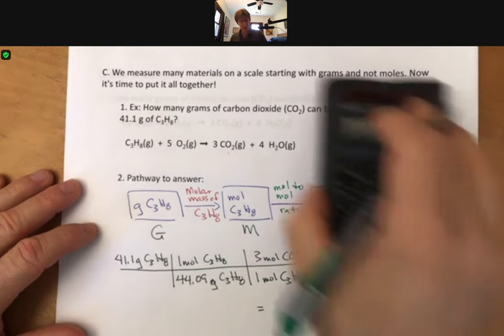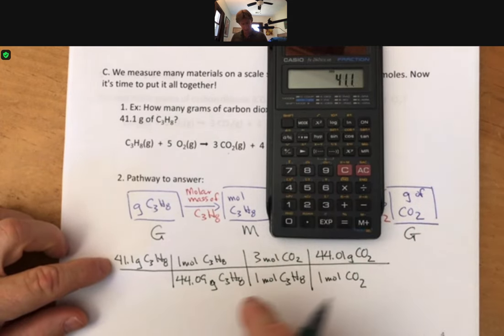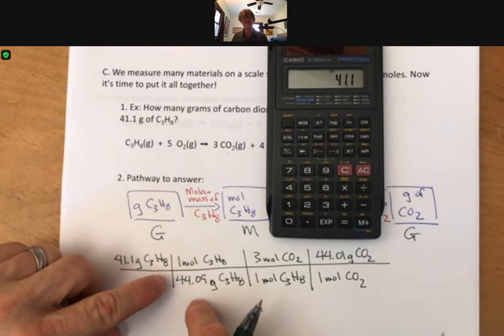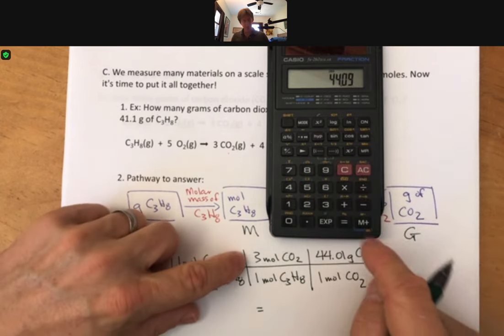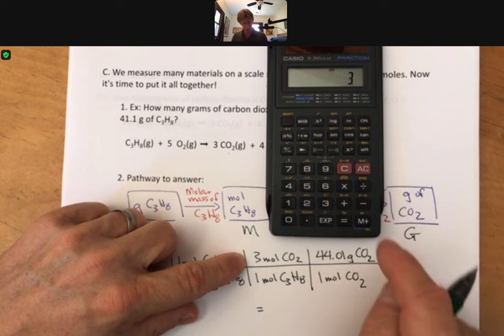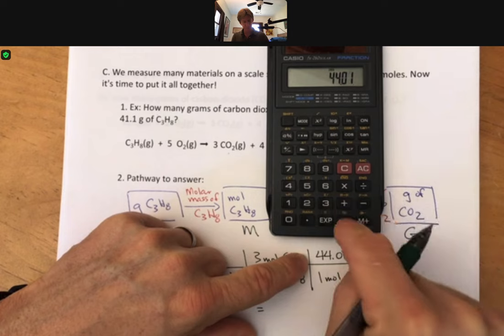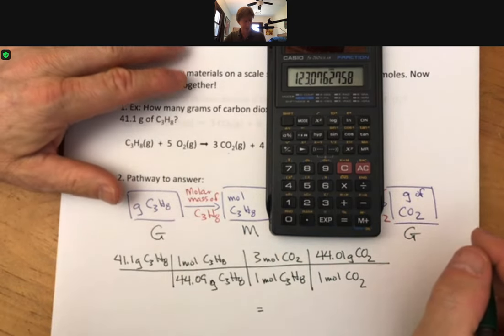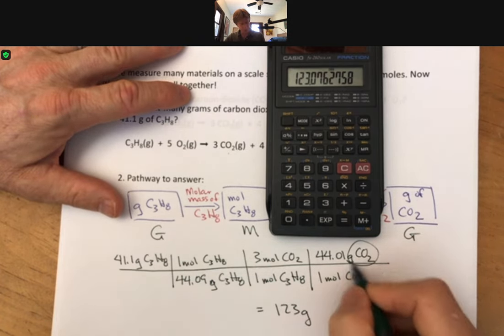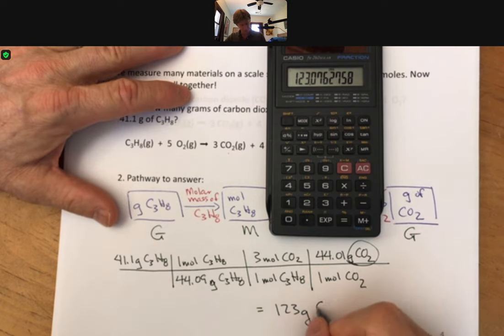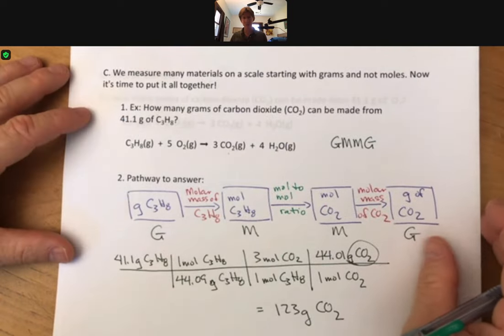Go ahead and multiply everything across. I've got 41.1, and I like to do it all the way across. So I'm going to divide by 44.09, I'm going to multiply times three, I'm going to multiply times 44.01 and I get 123 to three sig figs, 123 grams with my final units here grams of CO2. And that's our first GMMG problem. We have many more to do.